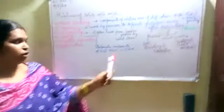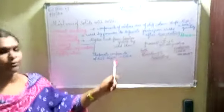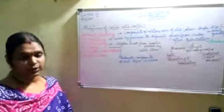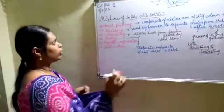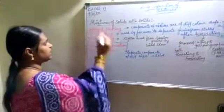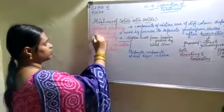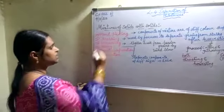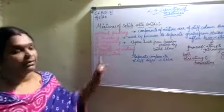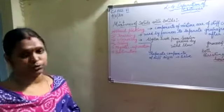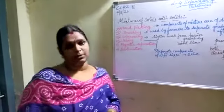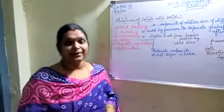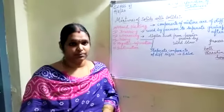So sieving is a method to separate the components of different sizes. Today's class we discussed four methods: hand picking, threshing, winnowing, and sieving. In our next class, we will discuss magnetic separation and sublimation. Thank you, have a wonderful day!